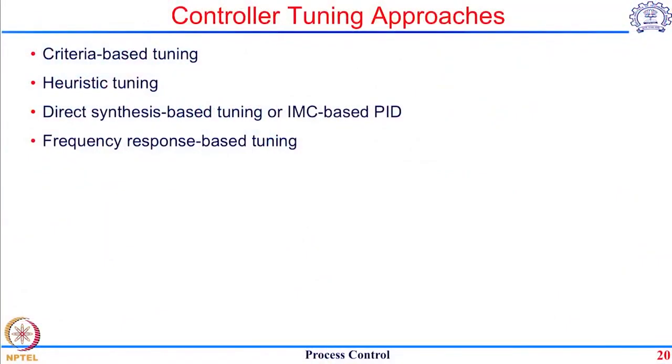Broadly, the types of approaches we are going to see for controller tuning are: first, criteria-based tuning; second, heuristic tuning; third, a model-based control strategy such as direct synthesis-based PID controller tuning or IMC-based controller tuning; and lastly, we will make use of frequency response to obtain a robust PID controller tuning. Let us start with criteria-based tuning as it is the simplest to understand. In criteria-based tuning, we select a few criteria from the list, form the closed-loop transfer function in terms of the PID controller, and solve those equations to satisfy the criteria.